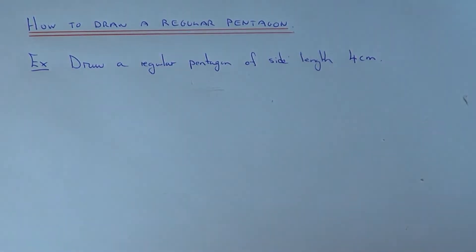Hi, today I'm going to show you how to draw a regular pentagon using a protractor and a ruler. So the first thing you need to know then is that a regular pentagon has five equal side lengths.